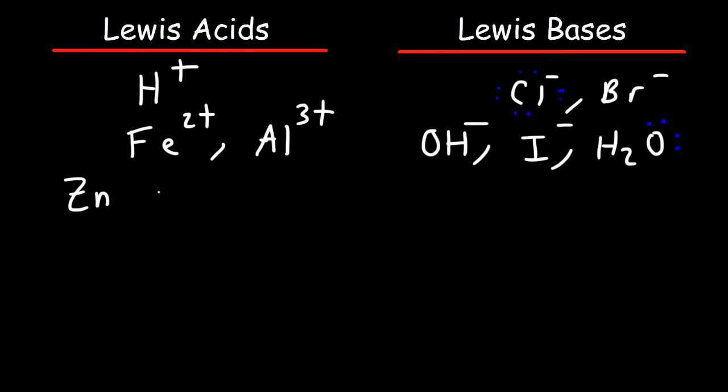Zinc chloride is another Lewis acid. BH3. All of these can accept a pair of electrons. FeBr3, AlCl3. These are some other Lewis acids.